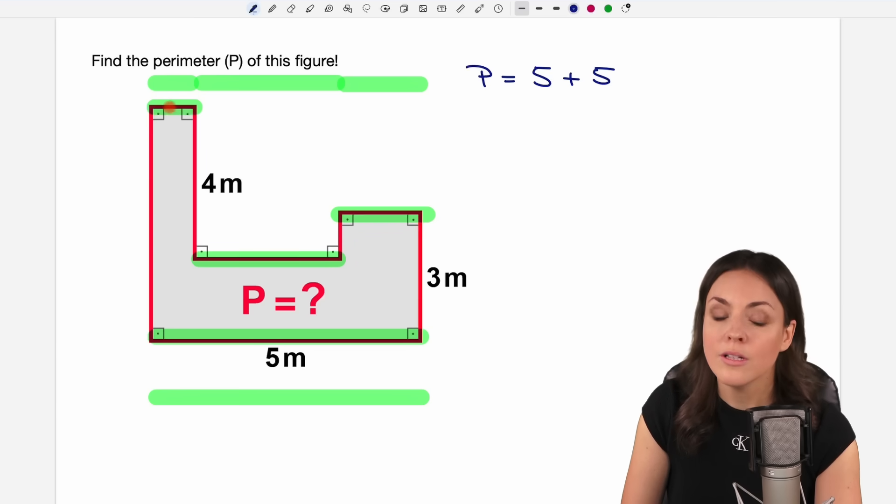We don't know the individual lengths, but we don't need them. We just need the perimeter, so we just need the sum of those, and this is five. These were all the horizontal lines.